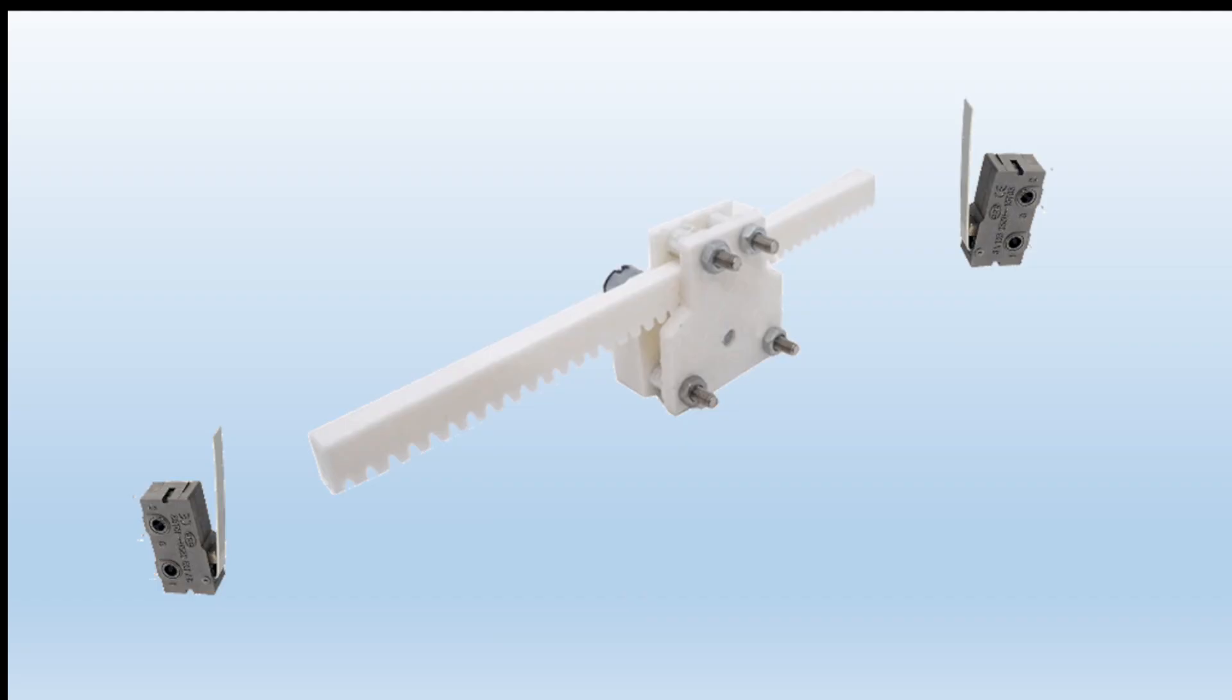This example uses two microswitches, one at either end, so that when the mechanical part comes to its extreme left it'll push the microswitch and make or break contact, the same in this direction here. So we have a detector at either end of the mechanical movement that you require.